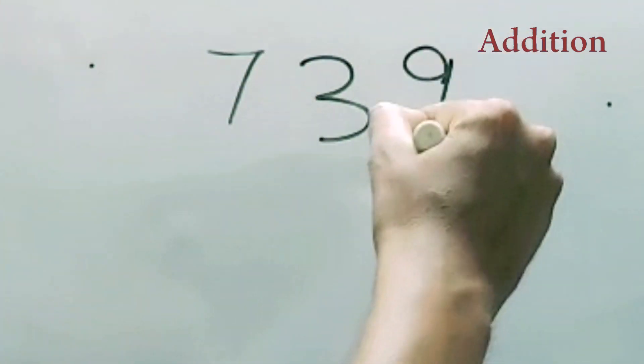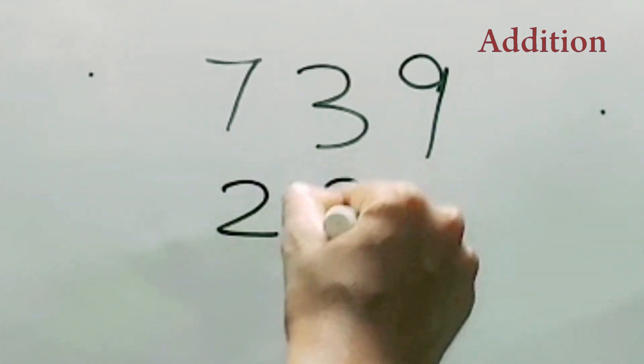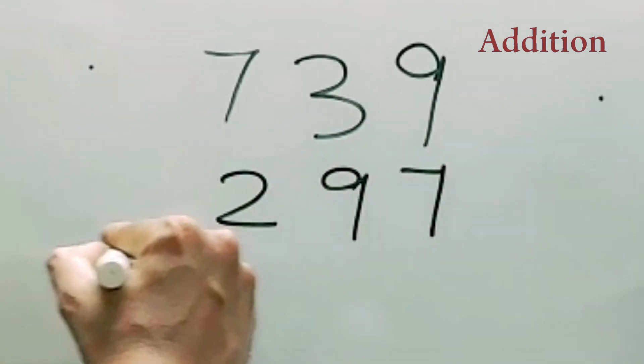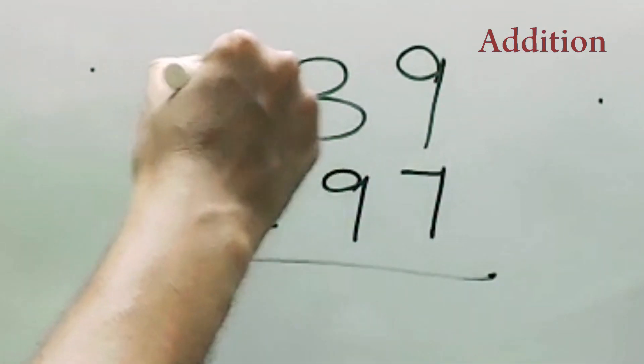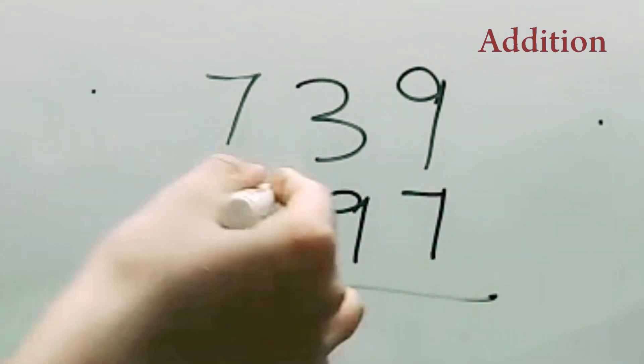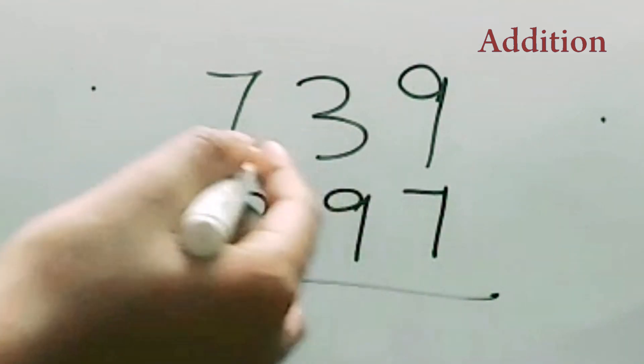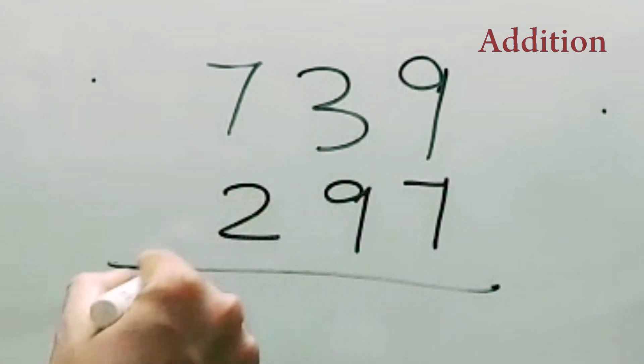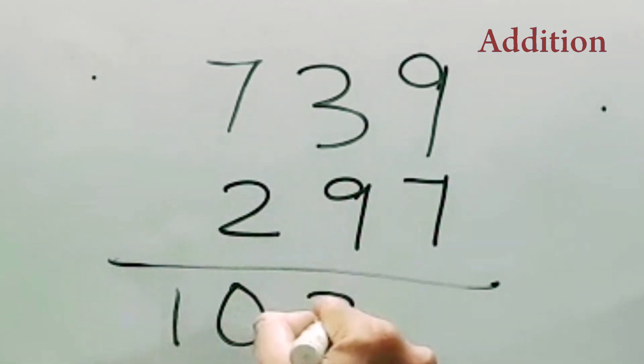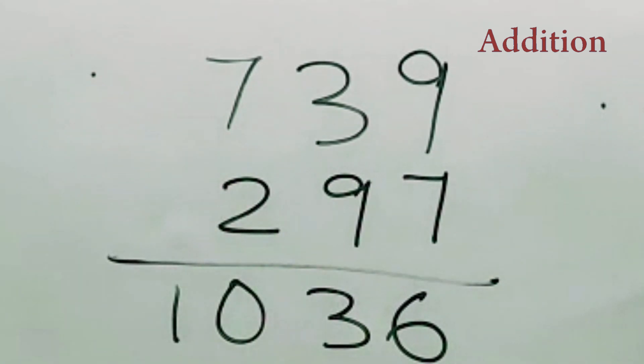Next one like 739, and with this just 297. And see, 700 plus 200, that is 900, and 30 plus 90, we know, 120, so 1020, and 7 plus 9 is 16, so 1036. Simple. You don't have to write it anywhere, just do it in your mind. Simplest calculation.